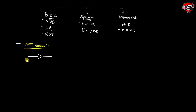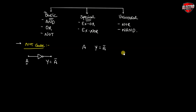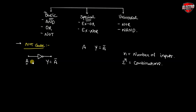If we apply input A, then the output Y is equal to complement of A. As we discussed earlier, if the number of inputs in a logic gate is N, then the number of possible combinations of inputs is given as 2 raised to N. In our first logic gate, N is equal to 1, meaning we have only one input signal.